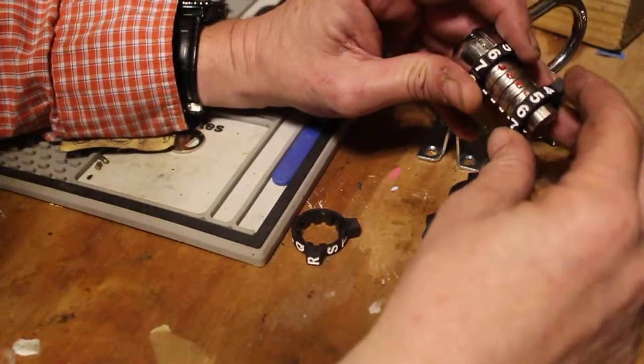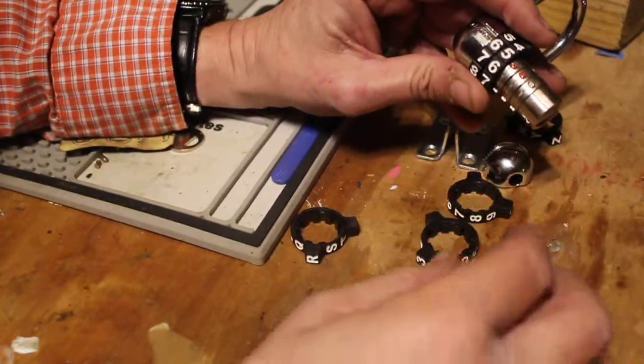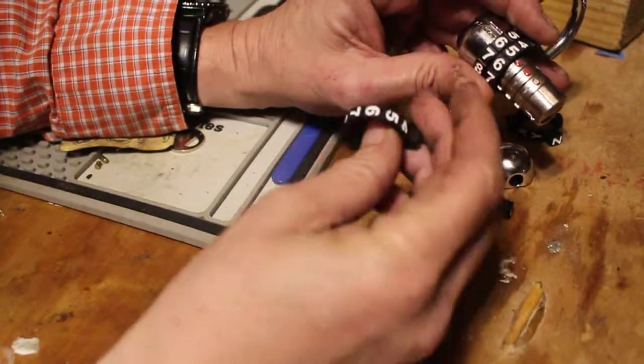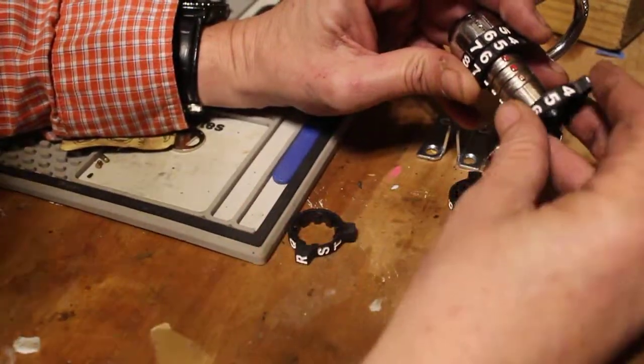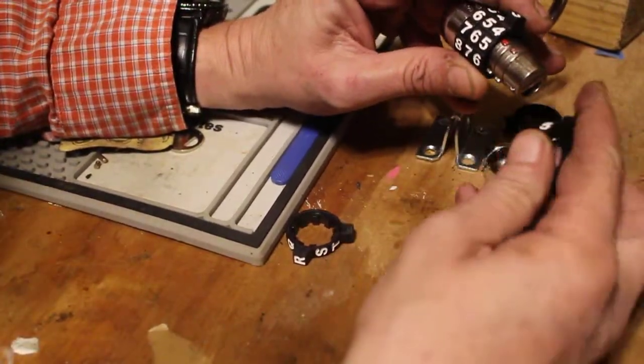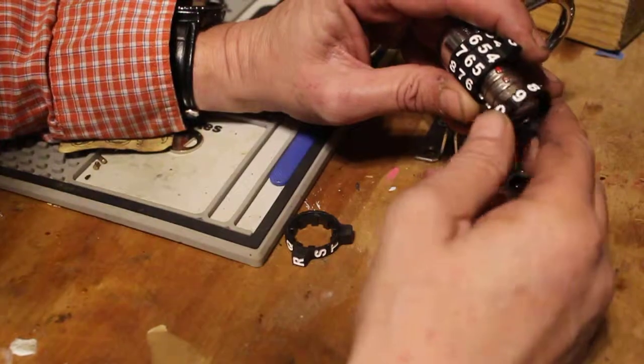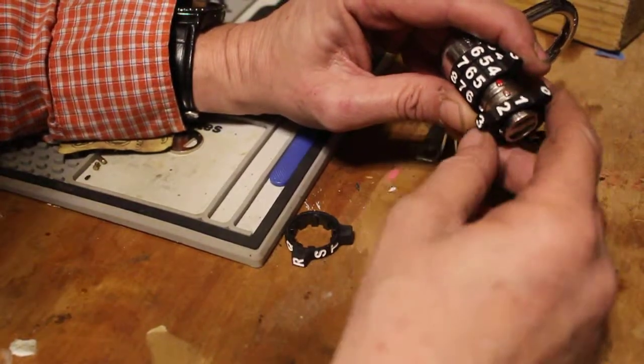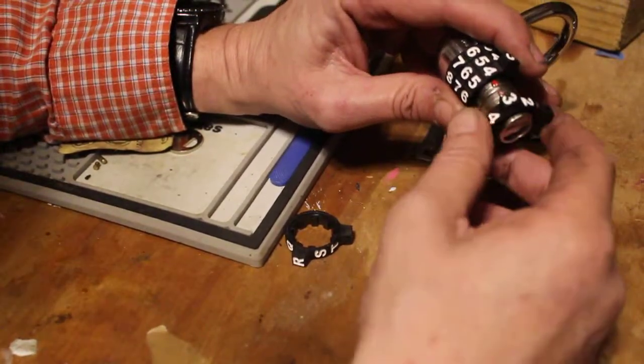Generally when I show you how to decode a lock, I set a combination that's unknown. I blind set a combination and then we go through the decode process together and you know it works because you see we do it.